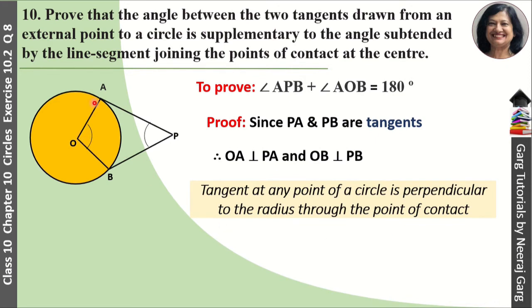When OA is perpendicular to PA, we have this angle OAP equal to 90 degrees. And OB is perpendicular to PB so angle OBP is also 90 degrees.